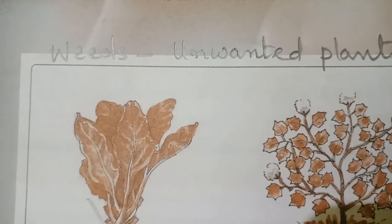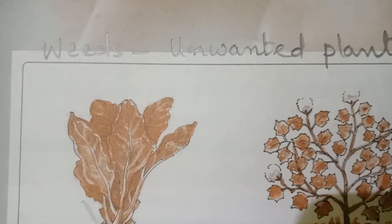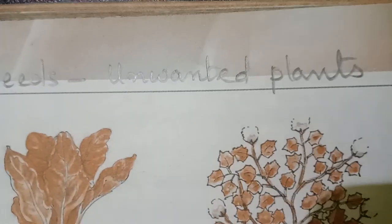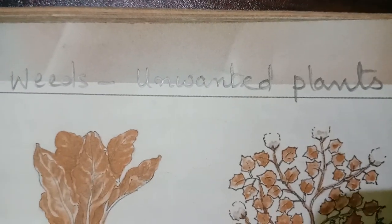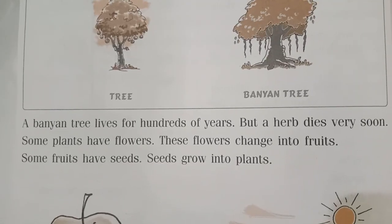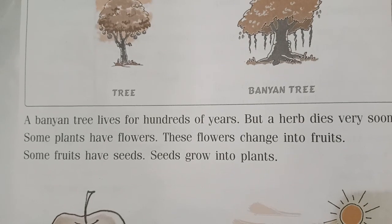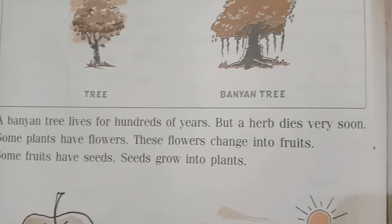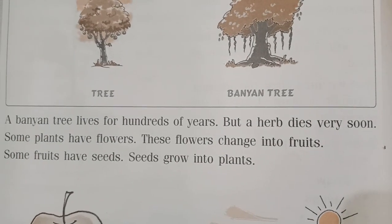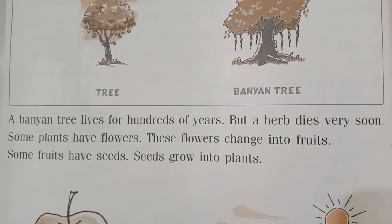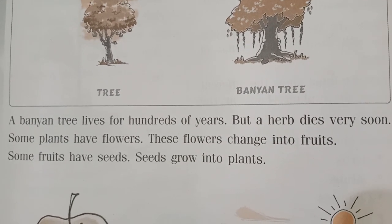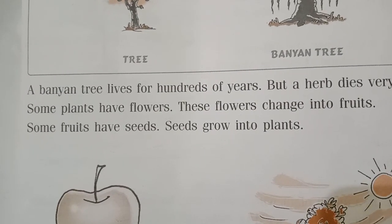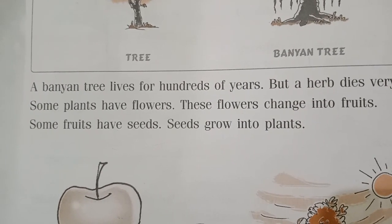I want to mention about weeds also. Weeds are unwanted plants that grow along with your plant. A banyan tree lives for hundreds of years, but a herb dies very soon because they are very small, weak, and soft compared to a banyan tree.